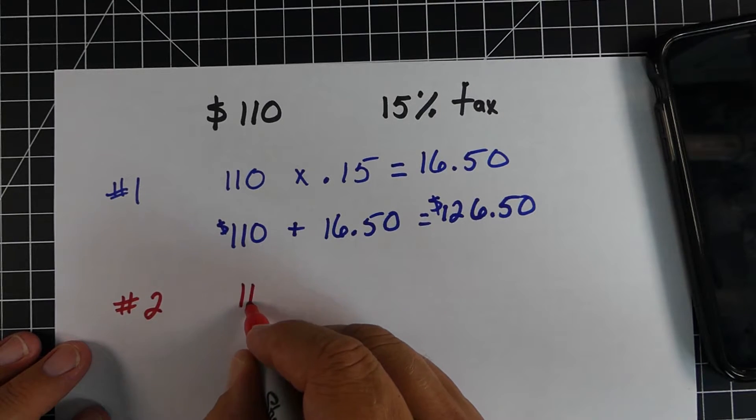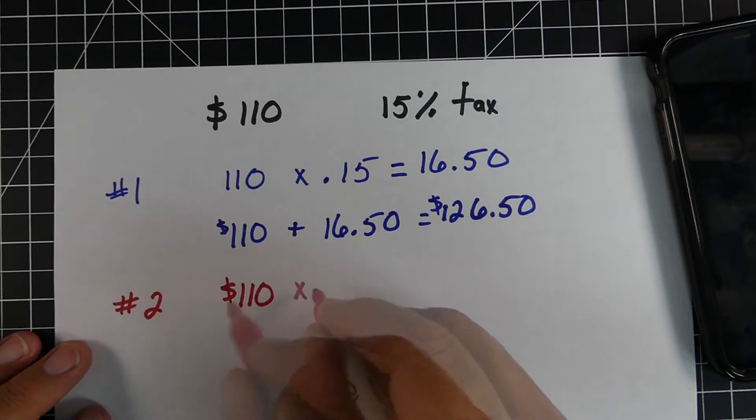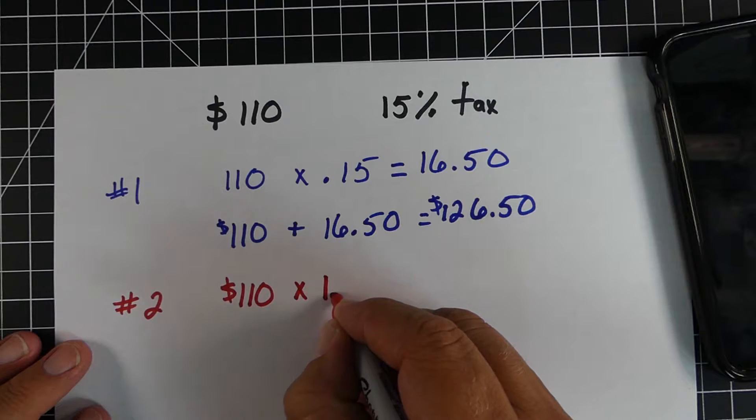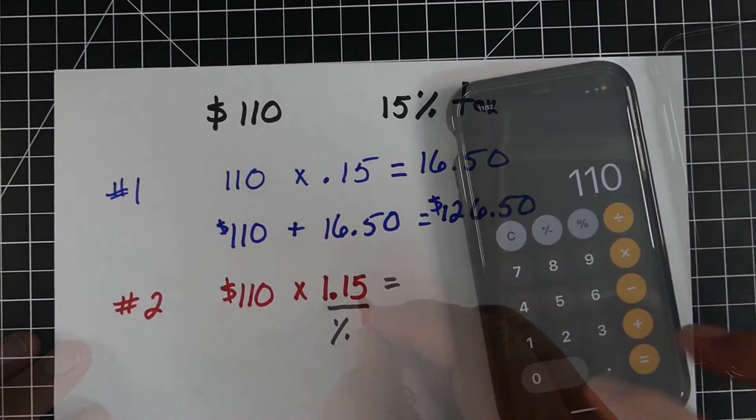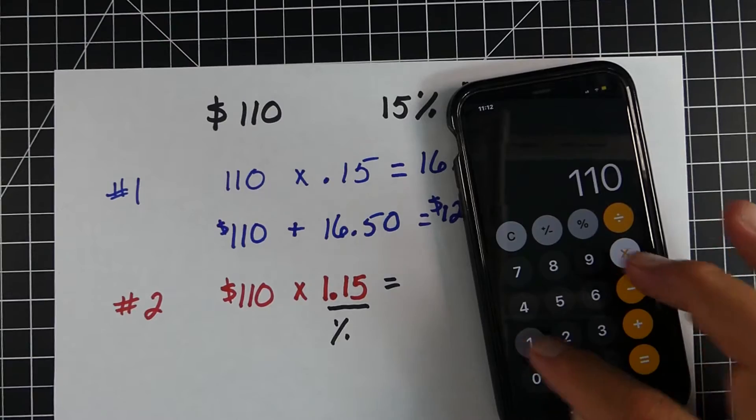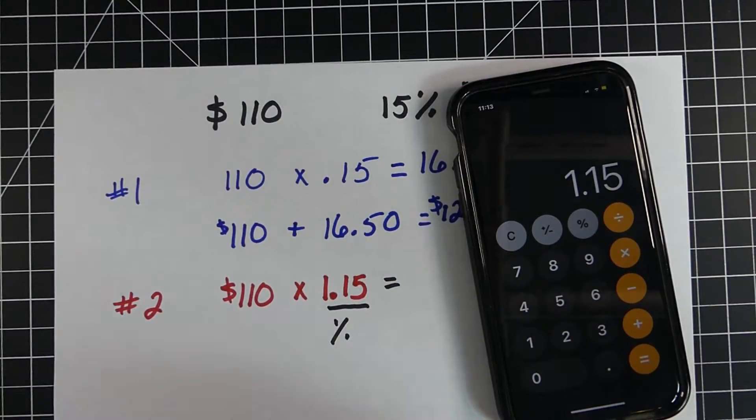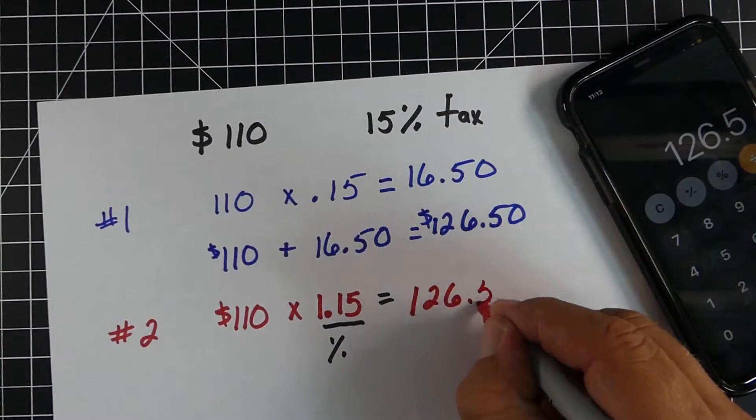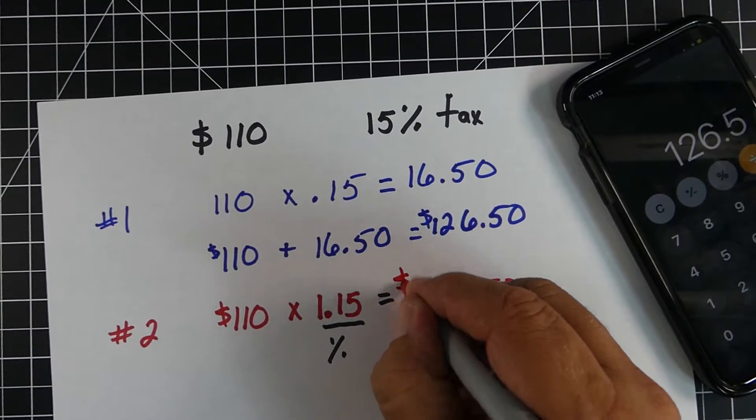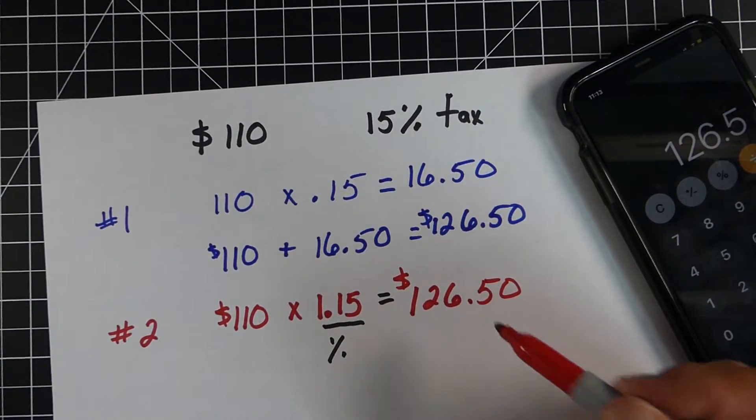Now method two, we would just take the $110 and we're going to multiply it by 1.15. So that's the whole amount and the 15% tax. So if we multiply those two together, you can see that we're going to end up getting the same amount, $126.50. So both ways, we're going to end up with the same answer.